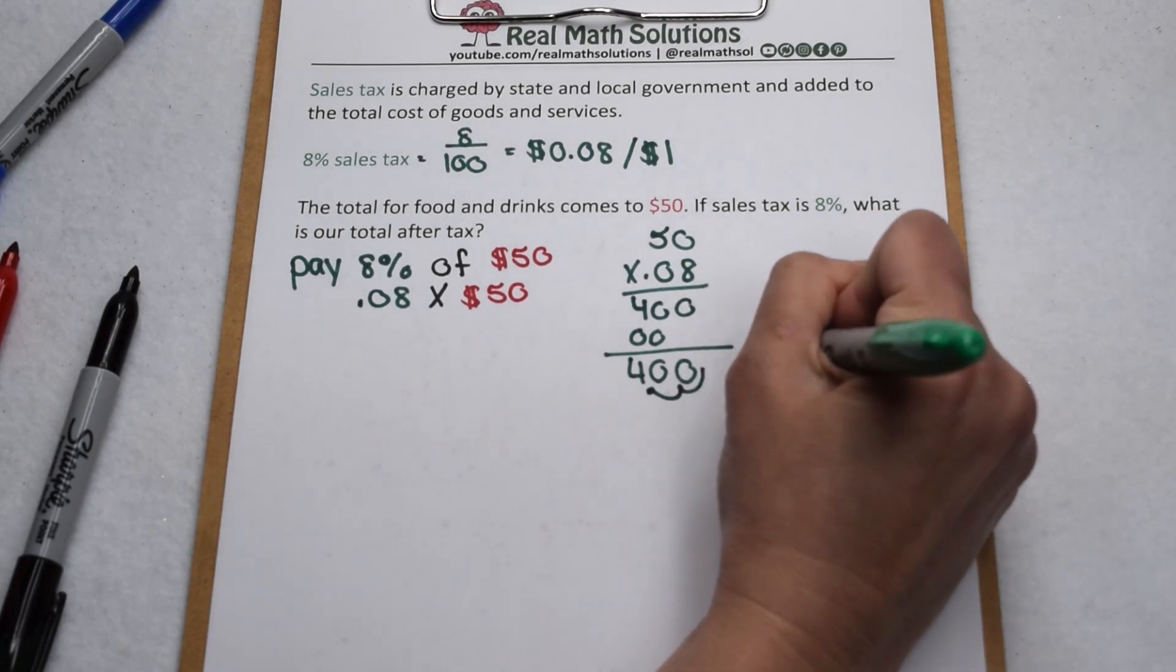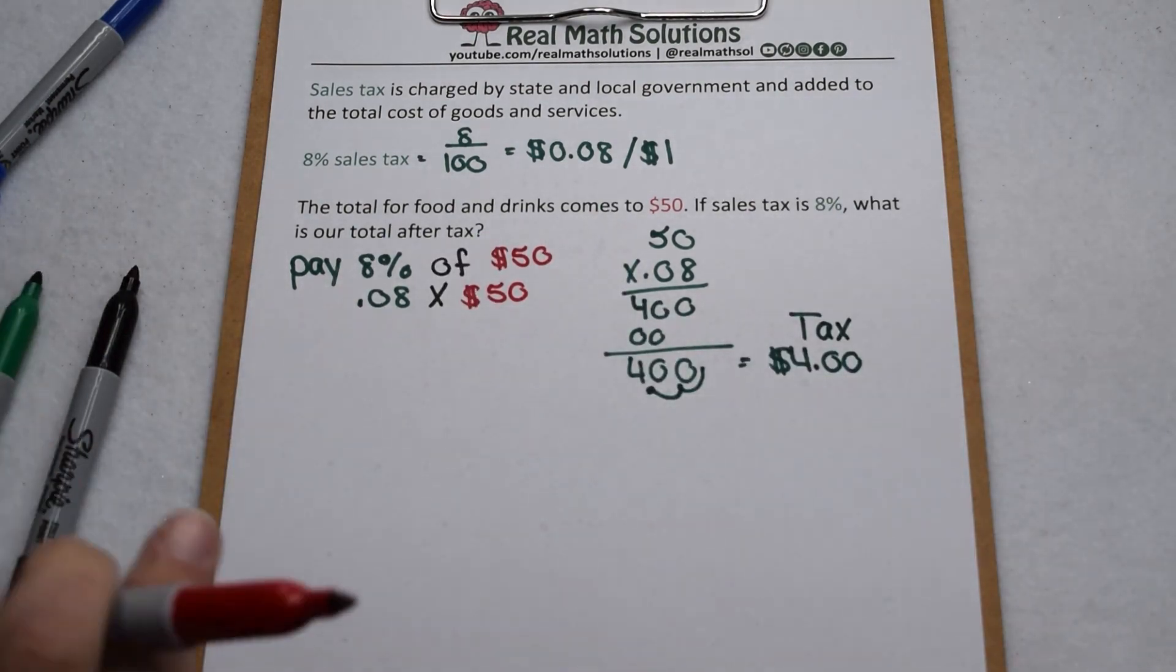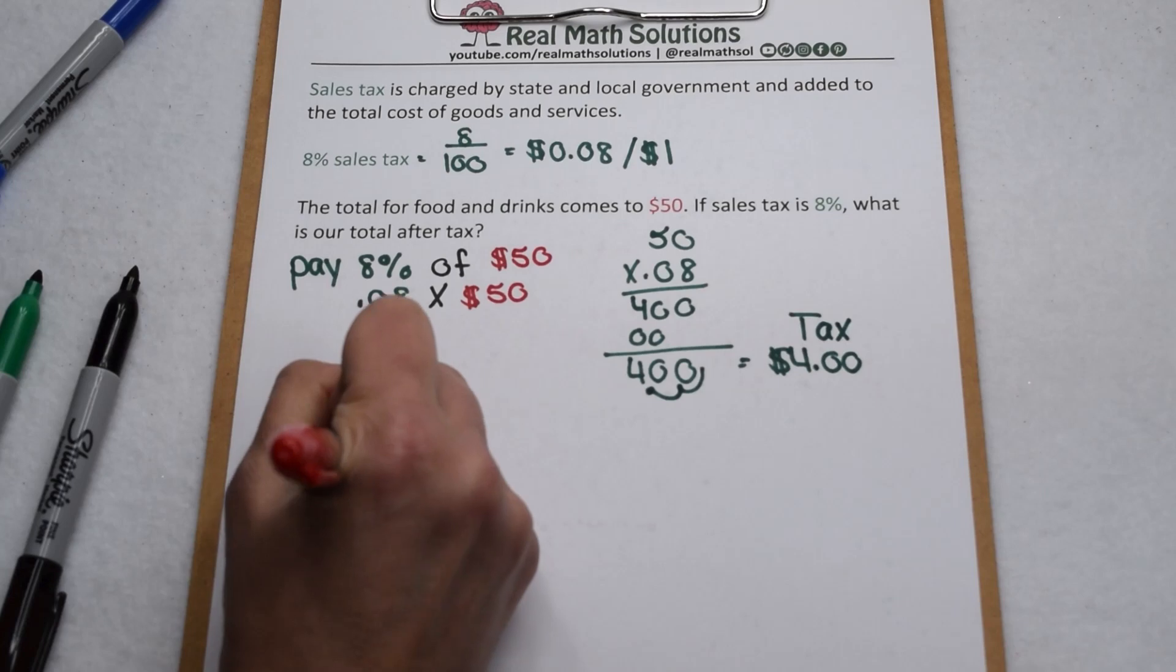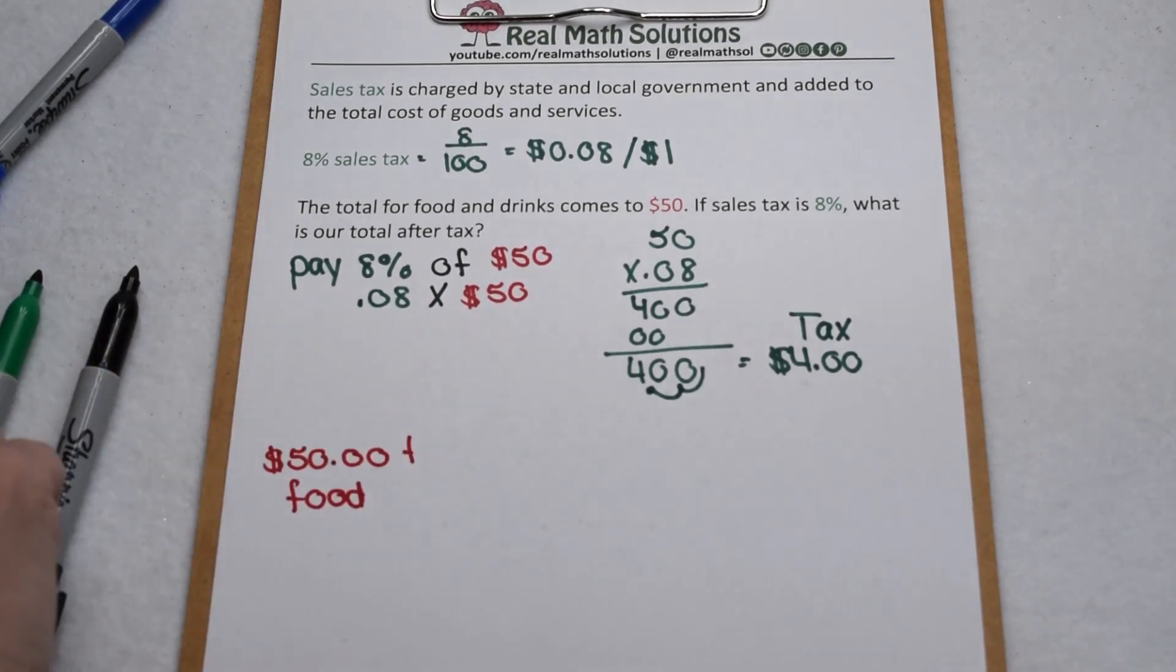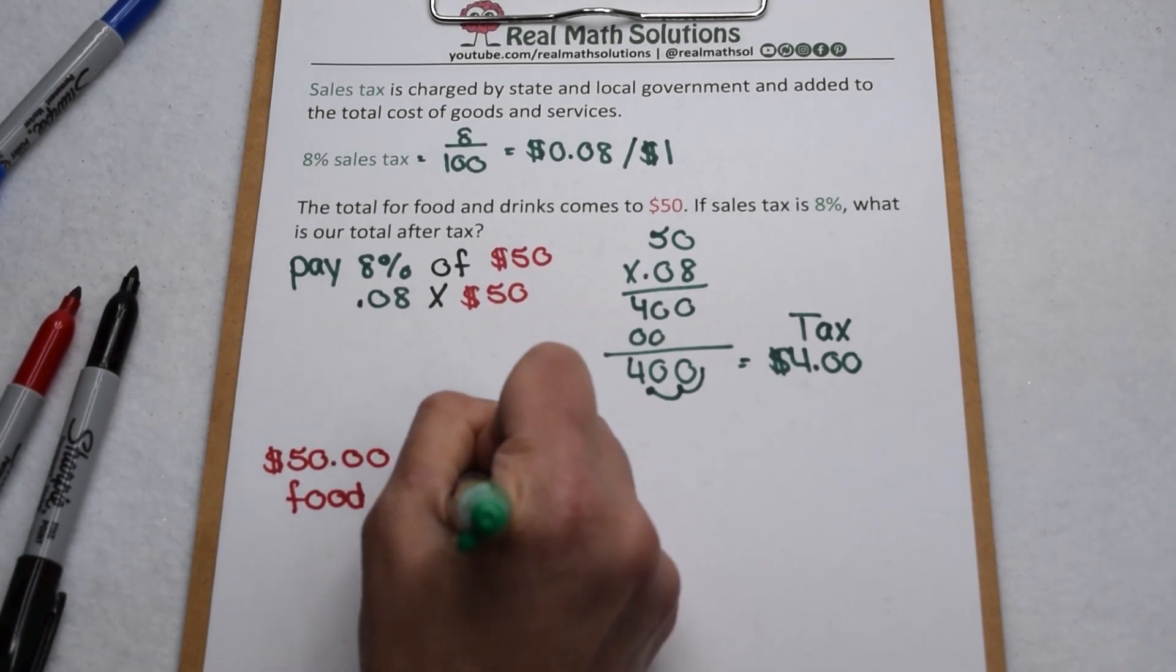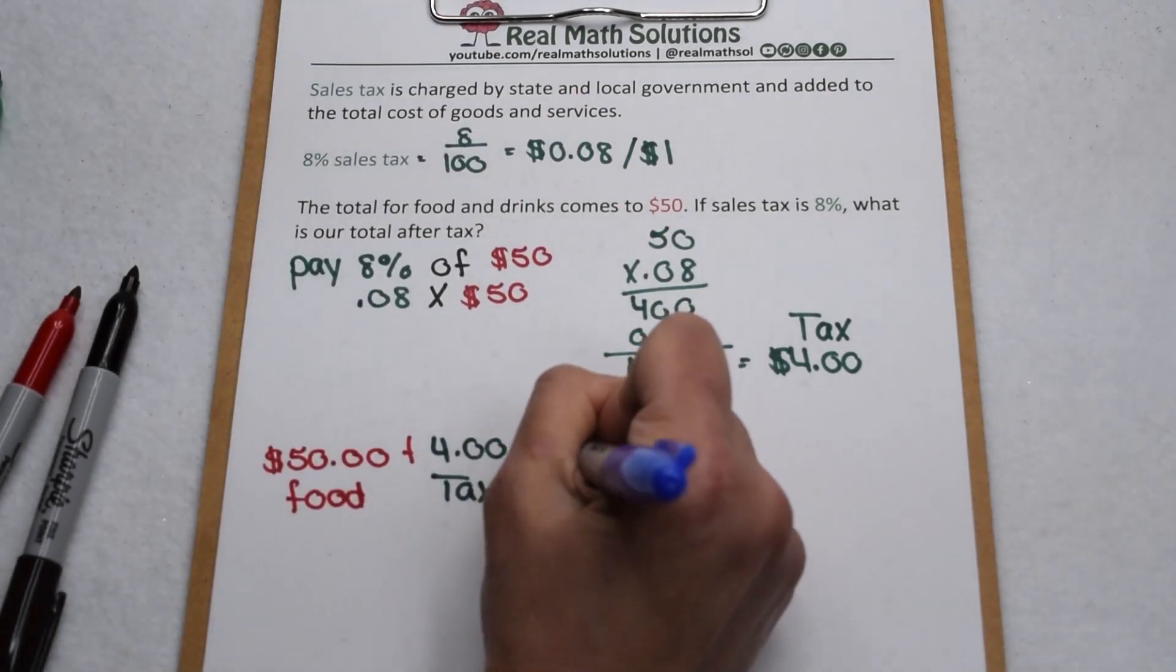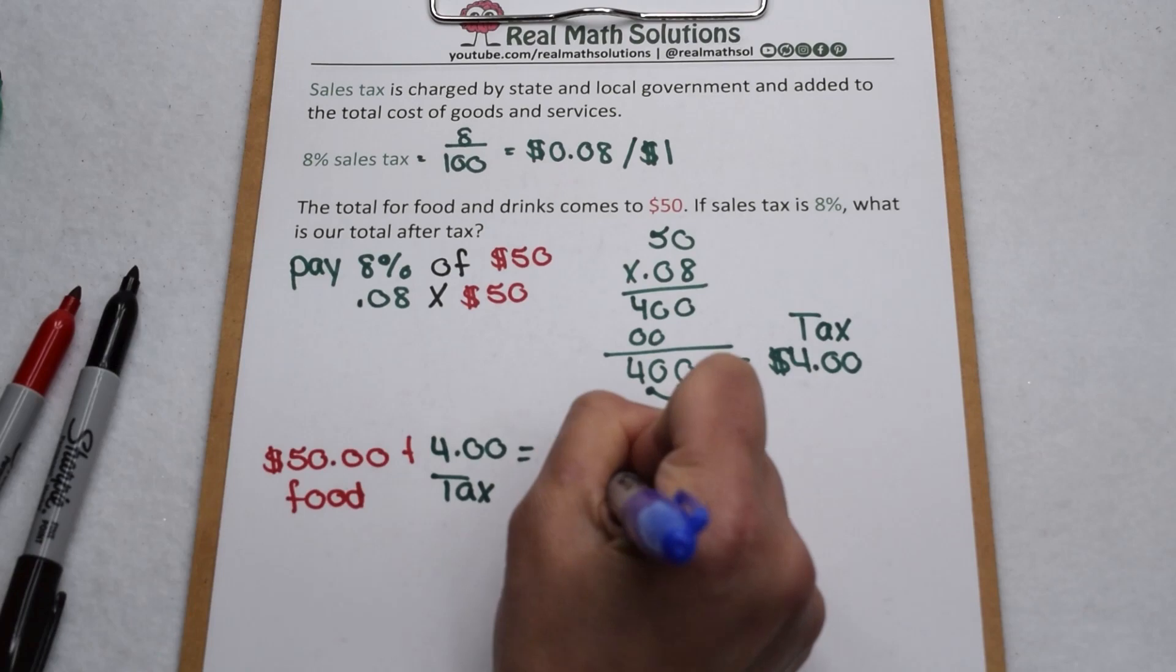So altogether, what is this going to cost us? We still have to pay the $50 for our food and drink. That doesn't get to go away. Now we're going to have to pay an extra $4 to the state or local government for our sales tax. So altogether, we're going to have to pay $54 to cover the cost of food, drink, and sales tax.